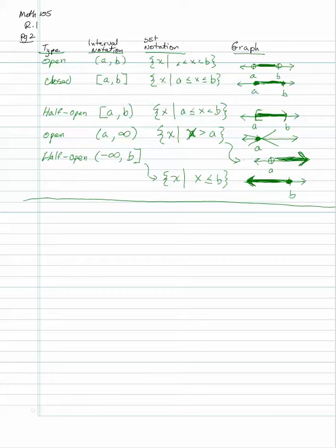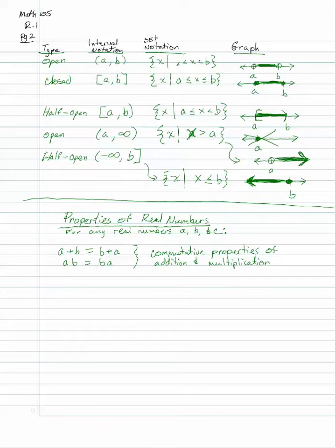Let's review the properties of real numbers. First, the commutative properties: A plus B equals B plus A, and A times B equals B times A. You can switch the order and get the same answer — but only for addition and multiplication, not subtraction or division. For example, 5 plus 8 is the same as 8 plus 5.